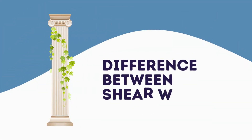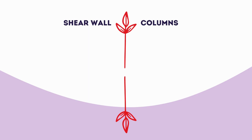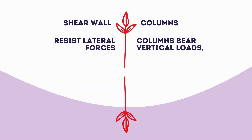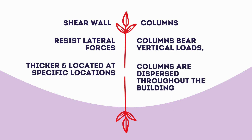So, what are the key differences between shear walls and columns? Shear walls mainly resist lateral forces, ensuring the stability of the building during seismic events or strong winds. On the other hand, columns bear vertical loads, supporting the weight of the structure. While shear walls are usually thicker and located at specific locations, columns are dispersed throughout the building, forming a network of vertical support.